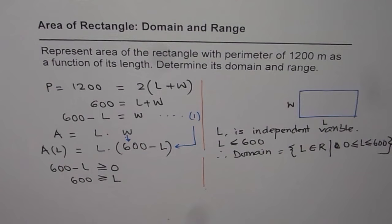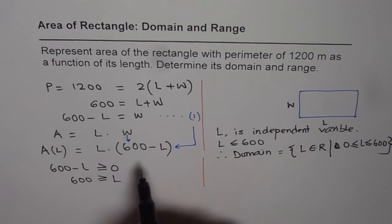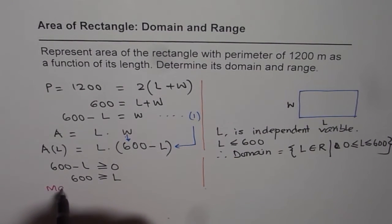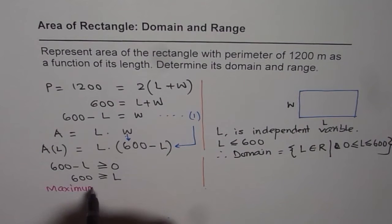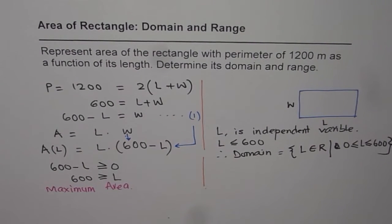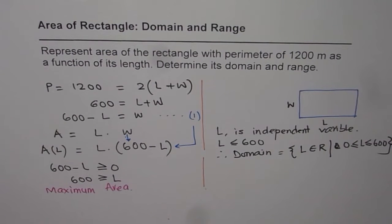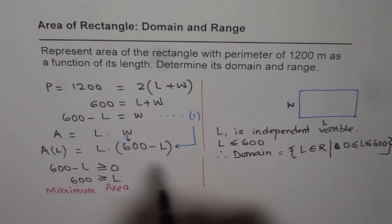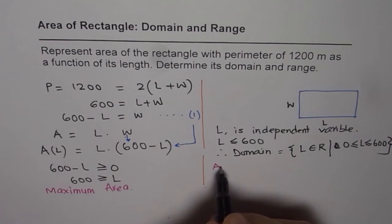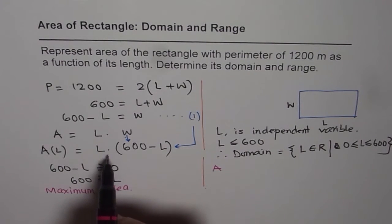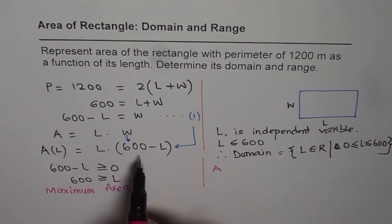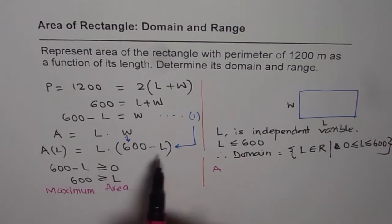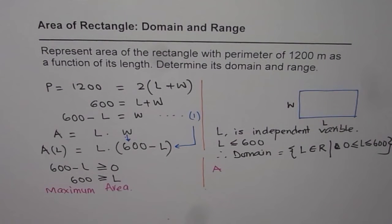Now, the second part is, what is the area? Well, the minimum area could be 0, but we need to find the maximum area. Now, how to find maximum area? That is a very critical question. So what we need to find is maximum area. So that will give us range. So range is from 0 to the maximum area. Now, if you analyze this system, which is area is actually equals to length times 600 minus length, this area will be 0 for length equals to 0 and for length equals to 600.